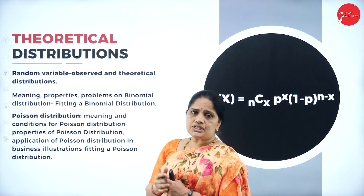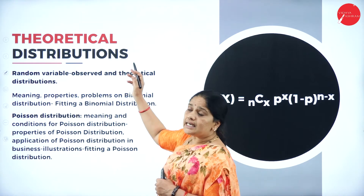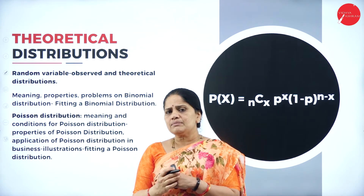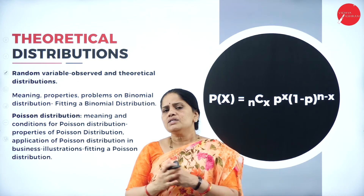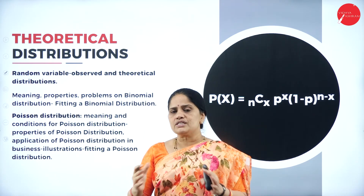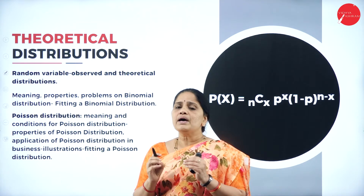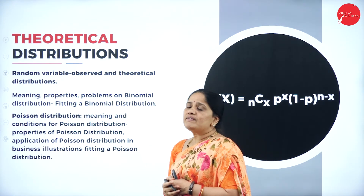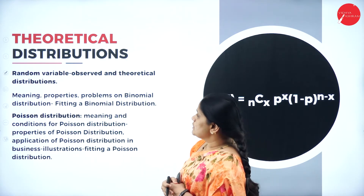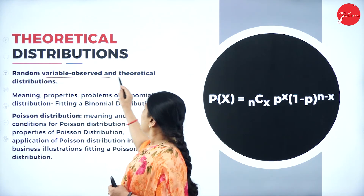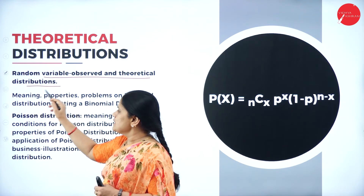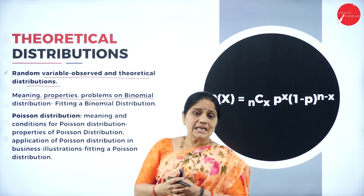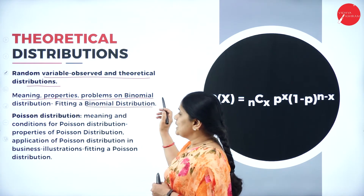Finally, the last unit of the syllabus relates to theoretical distributions. Distribution is nothing but spreading something. There are various types of distributions. We will be studying about random variable, observed and theoretical distributions, and also about the meaning, properties, and problems on binomial distribution and fitting a binomial distribution curve.